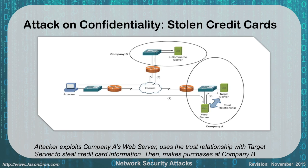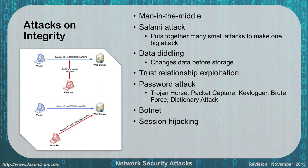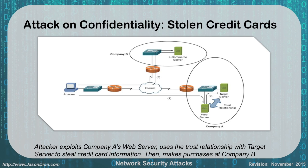Here's an example of a confidentiality attack involving stolen credit cards. An attacker exploiting Company A's website might use a trust relationship between a target server and the web server. By compromising the public-facing web server, they can pivot into the internal trusted network and steal credit cards from the target server. They then use those stolen credit cards on Company B's e-commerce server to purchase goods.